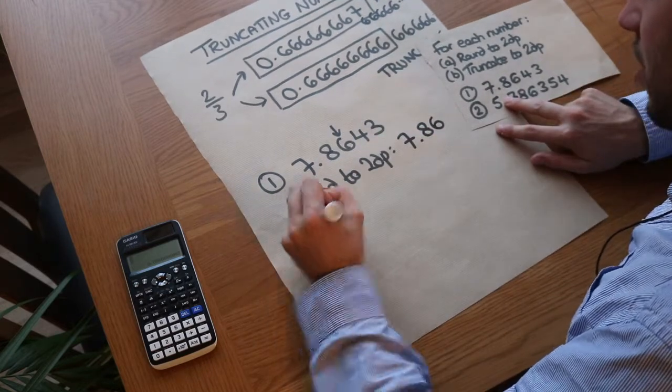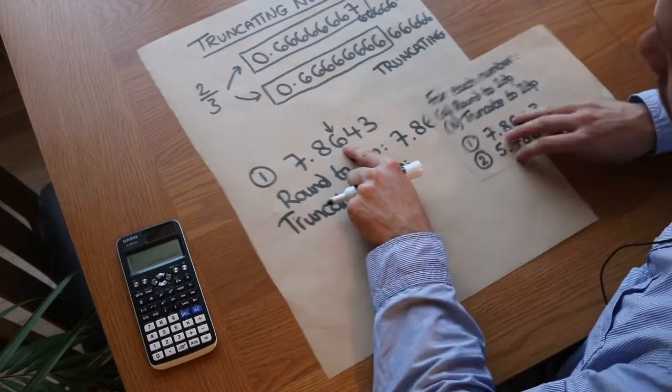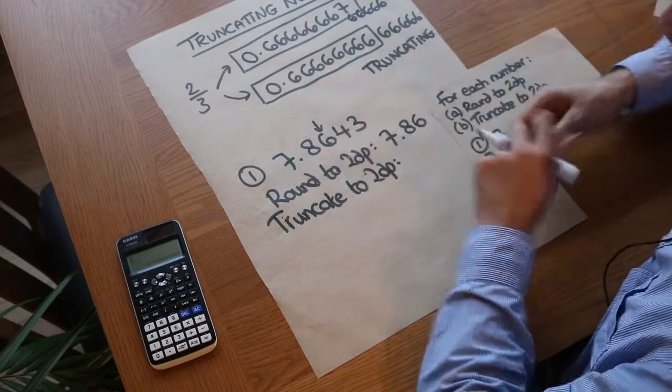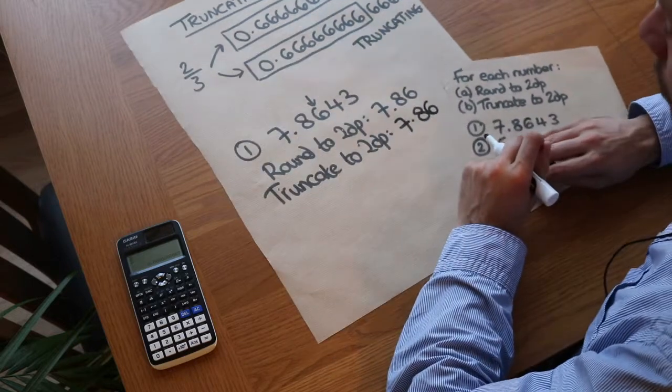If we truncate to two decimal places, we keep everything up to that six again, but we just wipe out everything after without checking any digits. So it's just 7.86. In this particular case, we get the same number if we round or truncate.